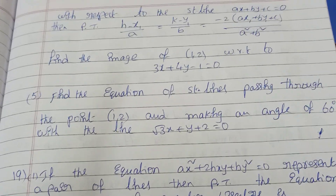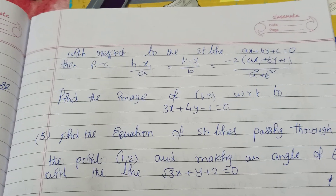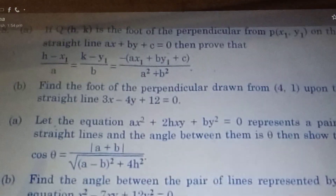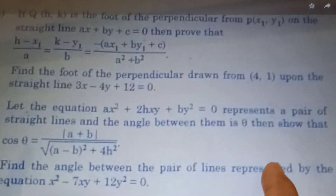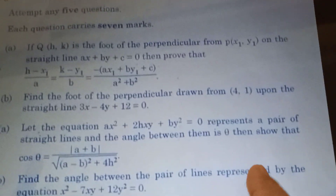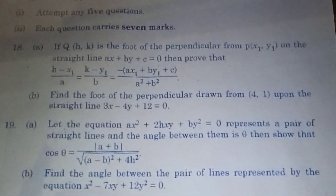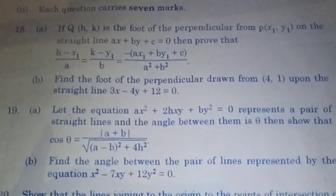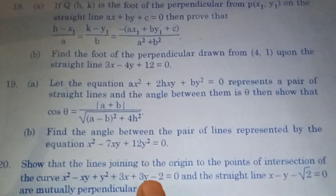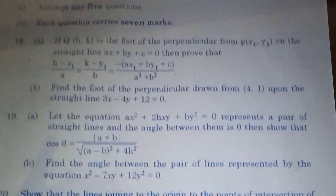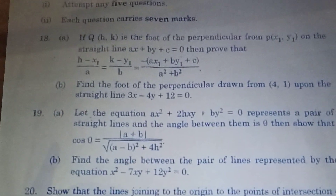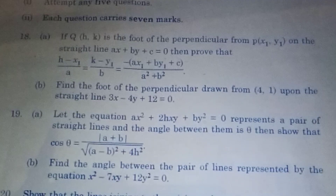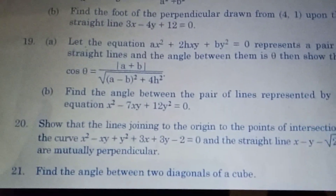Now we have the 19th bit. The 19th bit is a pair of straight lines. Now we have the pair of straight lines. The formula is: cos theta equal to modulus of (a plus b) by root of (a minus b) whole square plus 4h square. Every 19th bit is a theorem. The 20th bit is a homogenizing problem.